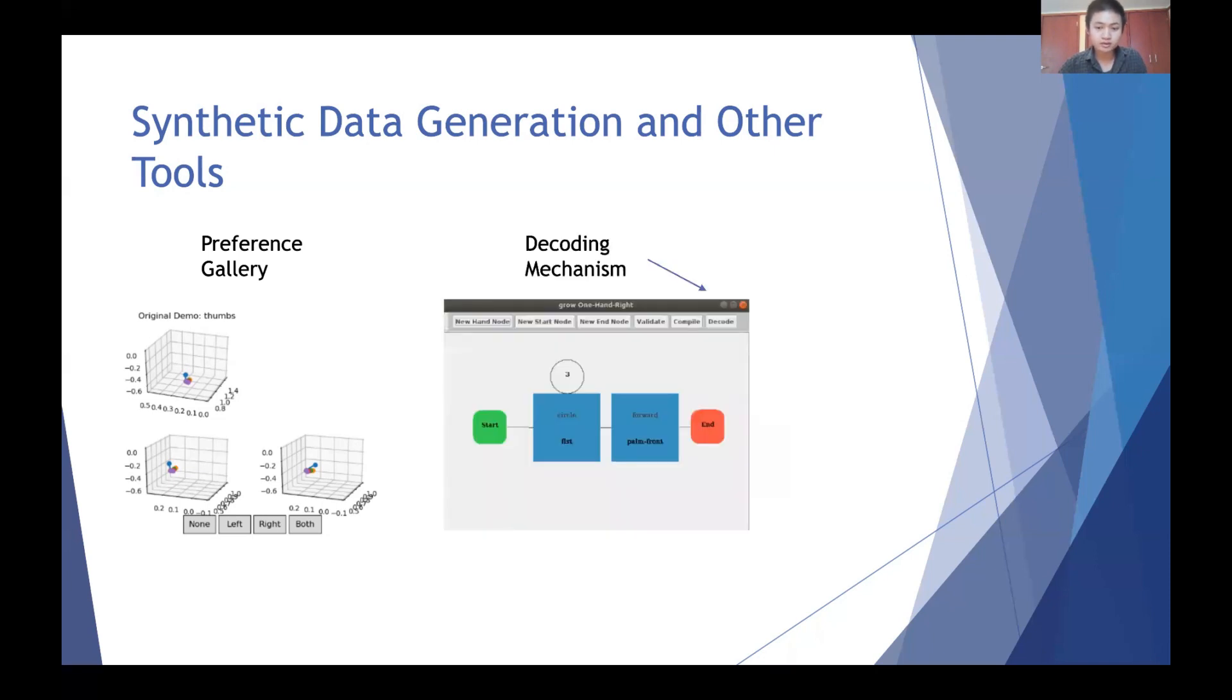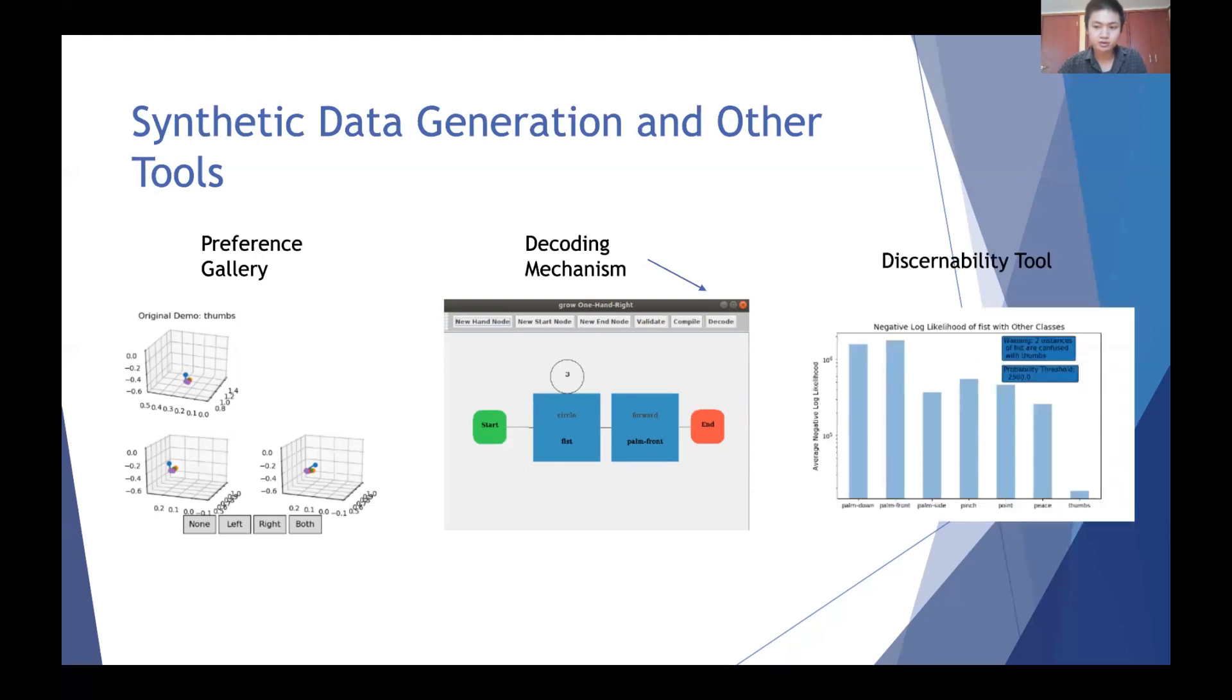We also included additional tools to aid the designer in the design process. Our decoding mechanism allows the input of a complex gesture demonstration and automatically generates the visual declarative script. In addition, we provide a discernibility tool to notify designers if two gestures declared are difficult to discern from each other.